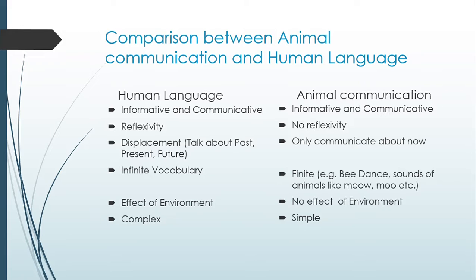One thing to remember is that human language and animal communication share a similarity: both are informative and communicative. For example, if I tell my friend I'm going to the bazaar, I'm informing her. If she says bring me a box of juice, that's a communication process. Similarly, when a crow crows, it may be informing its mates that it found fruit, and they all come and eat it — so communication and information exchange happen in both cases.